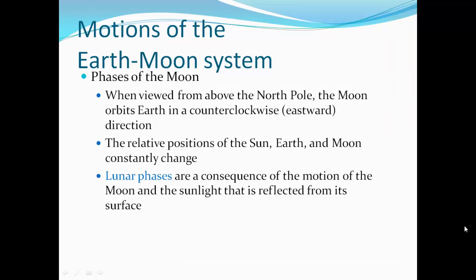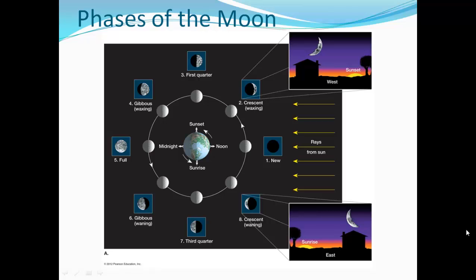The Moon has the motion of the Earth-Moon system, phases of the Moon. When viewed from above the North Pole, the Moon orbits the Earth in a counter-clockwise direction. The relative positions of the Earth, Sun, and Moon constantly change. This gives us our lunar phases. So the consequence of this motion of the Moon and sunlight that reflects from its surface allows us to see different parts of the Moon. So at the beginning of the Lunar Month, we have a new Moon. So the Sun's over here, and the Earth's over here. Moon's in between. So we're not seeing reflected surface off the Moon. We're seeing the Moon totally in shadow. So we don't see it.